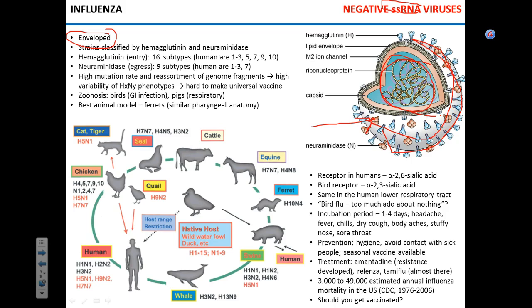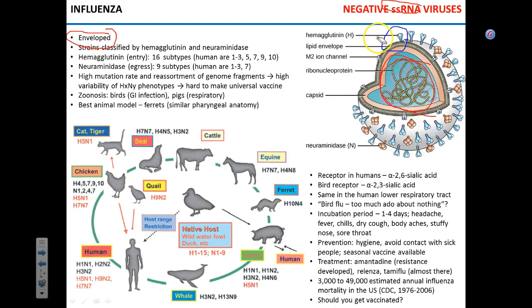You may have heard names for the influenza virus like H1N1, H5N1, H3N2. What does that mean? The envelope of influenza virus contains two main kinds of protein: hemagglutinin, shown here as these blue mushroom-like spikes, and neuraminidase, these flower-like assemblies.